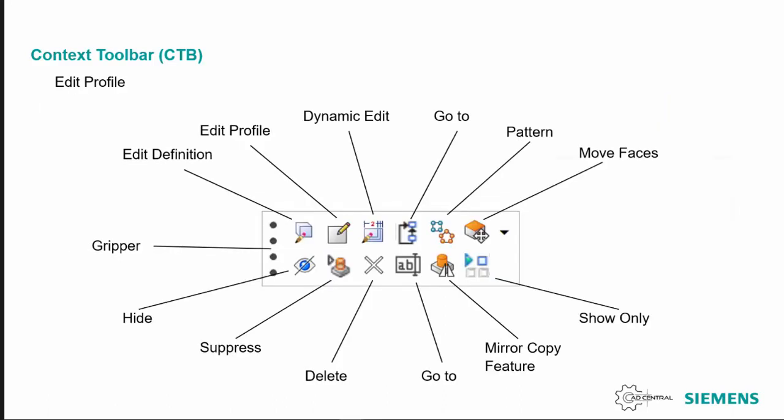Here is just an example. The most common top three options on the left — if you used the main menu when you right mouse click — you'll see edit definition, edit profile, and dynamic edit, as well as the go to command. In this example there's also pattern, move faces, hide, suppress, and delete.